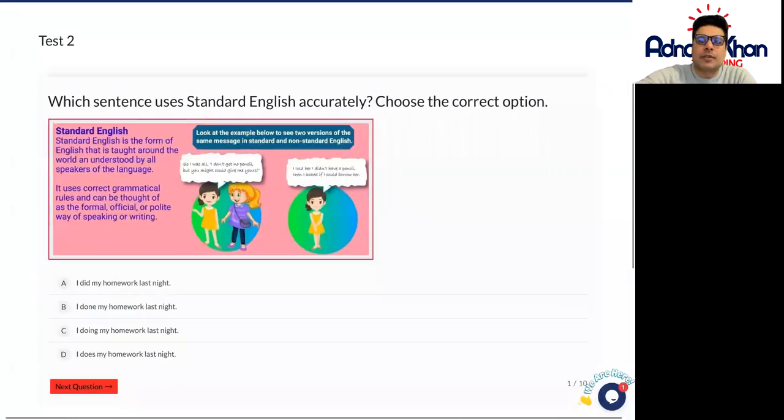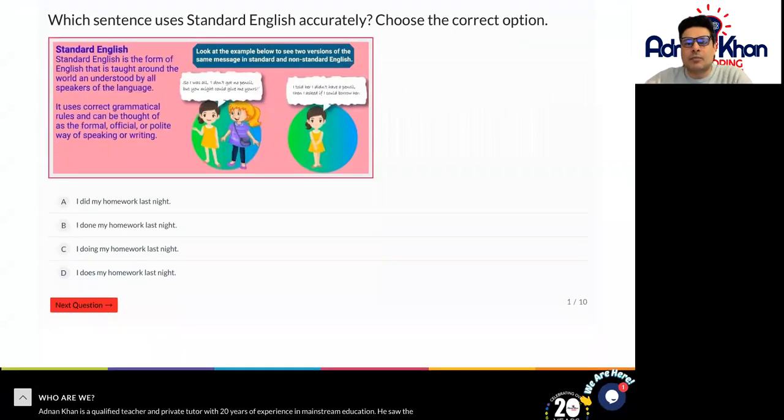Looking at these first options, which sentence uses standard English more accurately? Is it A, B, C, or D? A is I did my homework last night. B is I done my homework last night. C is I doing my homework last night, and D is I does my homework last night.